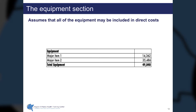The equipment section provides a schedule of all major equipment to be included in this project. The request for proposal from an agency will identify the types of equipment that qualify for inclusion. For purposes of this example, we're assuming all equipment has been deemed includable in direct costs, with two major items for a total of $49,848.